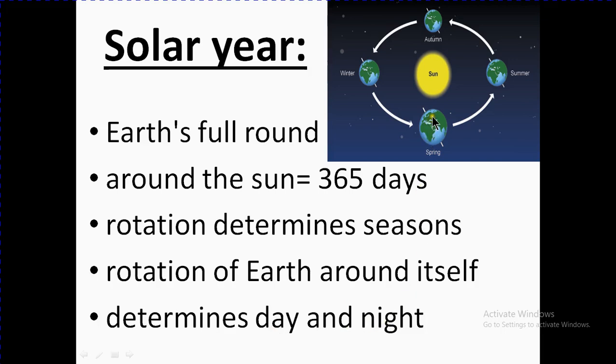For example, if this part is in front of the sun, here should be day. As it rotates around the sun and also spins around itself, then there will be night. In this way, seasons and day and night are determined.